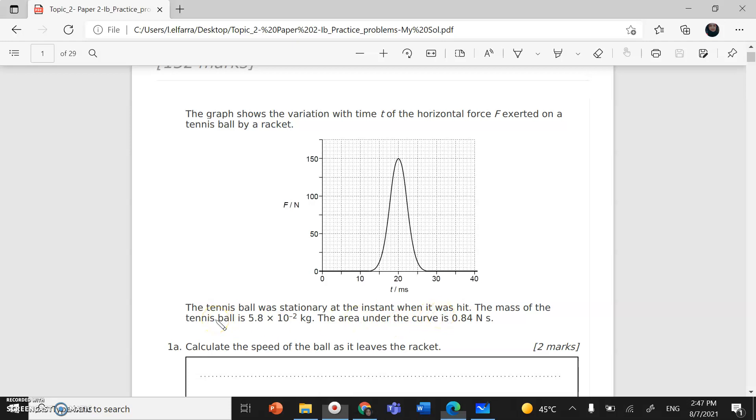The mass of the tennis ball is given, so this is m. The area under the force versus time graph is 0.84 newton times second. Look at the unit: newton times second. This is the unit of impulse or change in momentum.